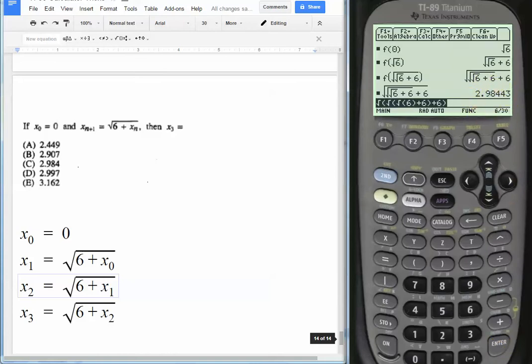which is 2.98. And that's our answer, which is 2.984, which is choice C. And we're done.